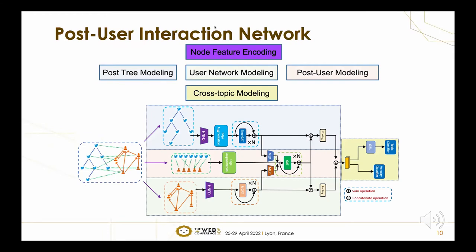Therefore, we propose a model named Post-User Interaction Network to process the heterogeneous graph. Generally, the model is composed of three modules. The first is a hybrid node encoder which encodes both text features and meta features. The second is a heterogeneous graph network, where we encode the post tree and the user network respectively and fuse their representations based on the post-user bipartite graph. The third is a topic-agnostic classification module which enforces the model to learn both discriminative and topic-invariant features for robust classification.